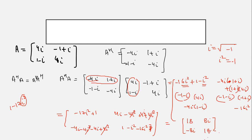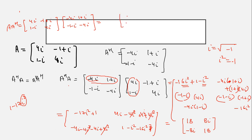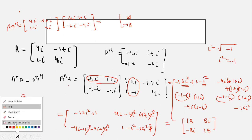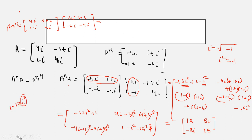Now let's find A times A raised to power H. So A is: 4 iota, 1 minus iota; minus 1 plus iota, 4 iota — multiplied by A^H which is: minus 4 iota, 1 plus iota; minus 1 minus iota, minus 4 iota. If you multiply this out, you will find that both values are the same — 18, minus 8 iota, 8 iota, and 18. Since A^H A equals A A^H, this is confirmed to be a normal matrix.